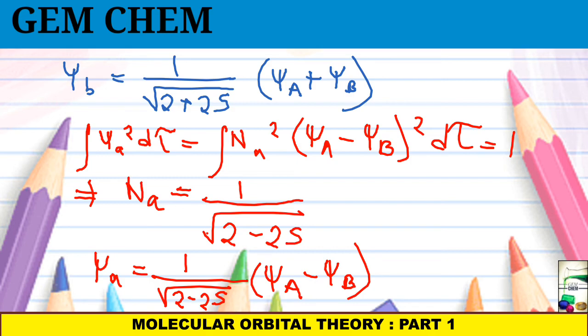This ends today's topics. In the next video we will deal with the expression of energy for bonding and anti-bonding molecular orbitals, why He2 does not form, the pictorial representation of radial wave functions for bonding and anti-bonding molecular orbitals of the hydrogen molecule, and the criteria for LCAO — linearly combined atomic orbitals — to form molecular orbitals. Hope this was helpful. Thank you for watching; do not forget to like, share, and subscribe.